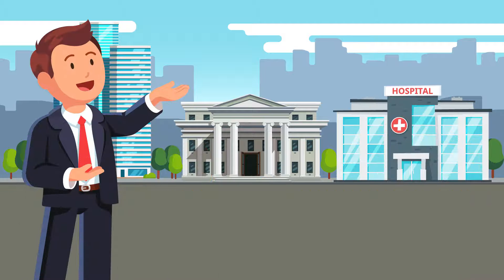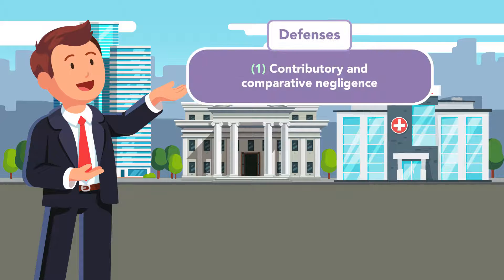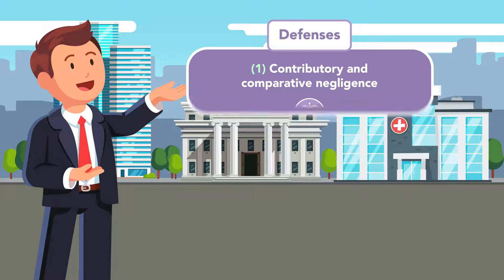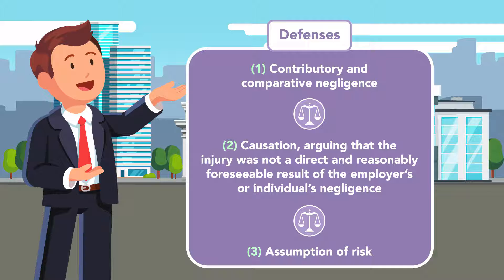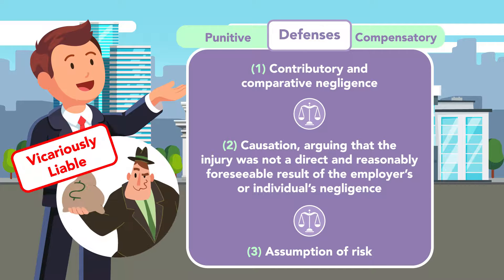In this module, we will examine the defenses that employers or individuals may assert when faced with vicarious liability: namely, 1. Contributory and comparative negligence; 2. Causation, arguing the injury was not a direct and reasonably foreseeable result of the employer's or individual's negligence; and 3. Assumption of Risk. We will also examine the types of damages — punitive and compensatory — that employers or individuals may face if deemed vicariously liable for employees' or others' misconduct.